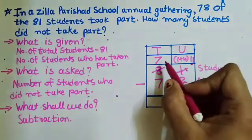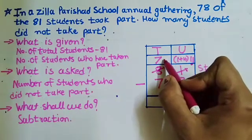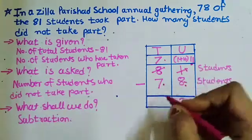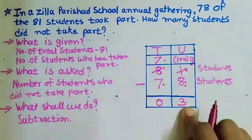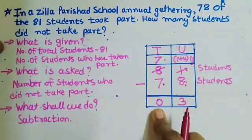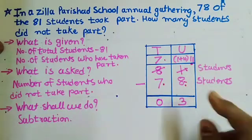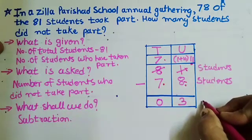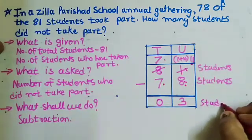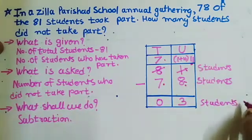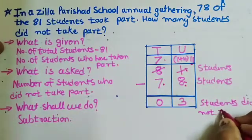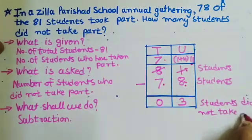Now we subtract from the tens column: 7 minus 7 is 0. So we have 0 tens and 3 units, which means only 3 students did not take part in the gathering.